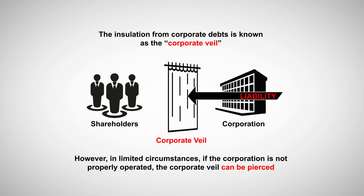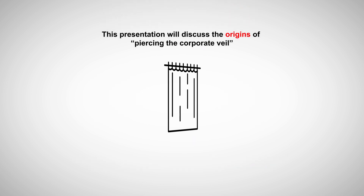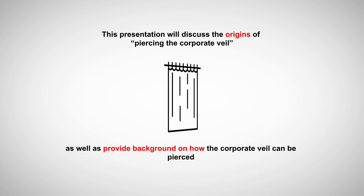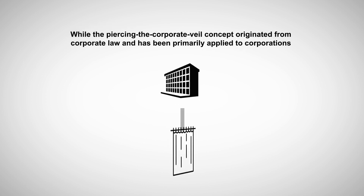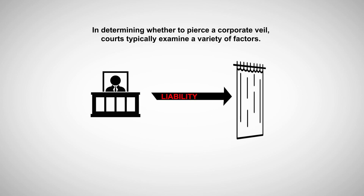However, in limited circumstances, if the corporation is not properly operated, the corporate veil can be pierced. This presentation will discuss the origins of piercing the corporate veil as well as provide background on how the corporate veil can be pierced. While the concept originated from corporate law and has been primarily applied to corporations, veil piercing has been extended to other forms of business entities such as limited liability companies and limited partnerships. In determining whether to pierce the corporate veil, courts typically examine a variety of factors.